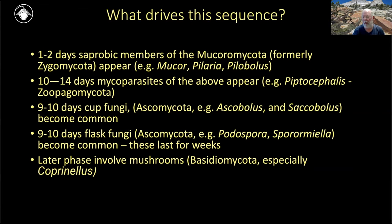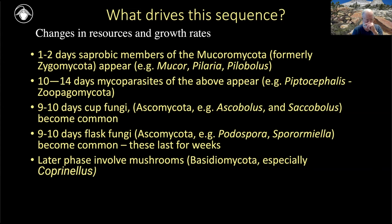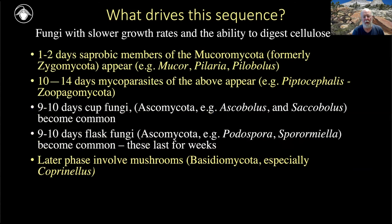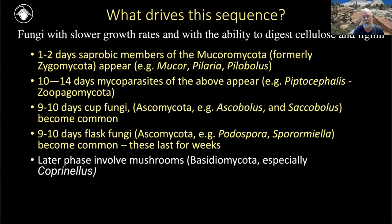A question from the outset has been: what drives this sequence — is it really successional? The first idea was a change in resources and growth rate. The early fungi target simple sugars and aren't able to break down more complicated compounds in dung. The Ascomycetes, next to show up, are able to digest more recalcitrant forms of sugar like cellulose, so they can make their living even after simple sugars have been removed. The last phase, the Basidiomycota, also had access to lignin as well as cellulose.